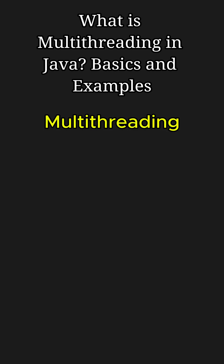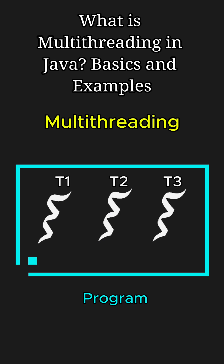Multi-threading in Java is the ability to execute multiple threads concurrently within the same program. A thread is the smallest unit of execution — think of it as a lightweight process. Multi-threading allows you to perform multiple tasks at the same time, improving performance and resource utilization.